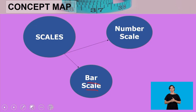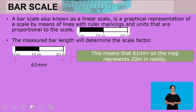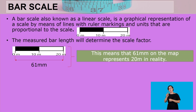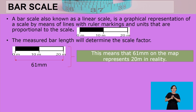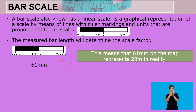Welcome back learners. Now let's continue to bar scales. A bar scale is also known as a linear scale. It is a graphical representation of a scale by means of lines with ruler markings and units that are proportional to the scale. This is an example of a bar scale.